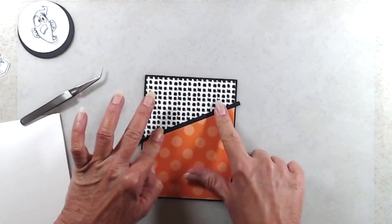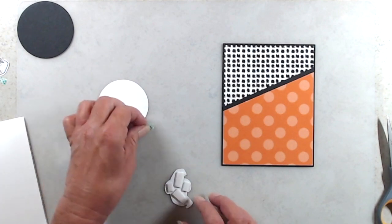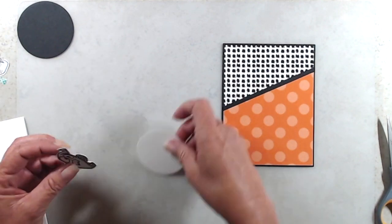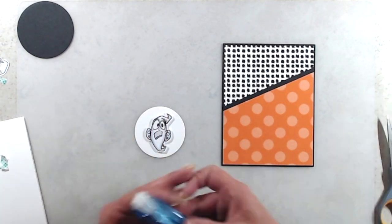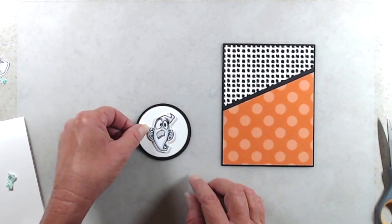I put foam tape on the back of the ghost, and adhered him to a white circle. Then I used my tape runner to adhere that to a black circle that was cut just slightly larger. And of course, more foam tape on the back of the black circle, and I adhered that to the front of the card.